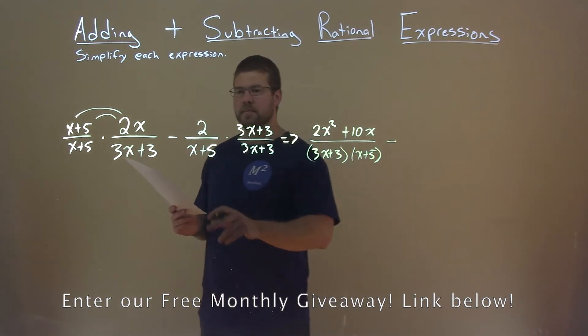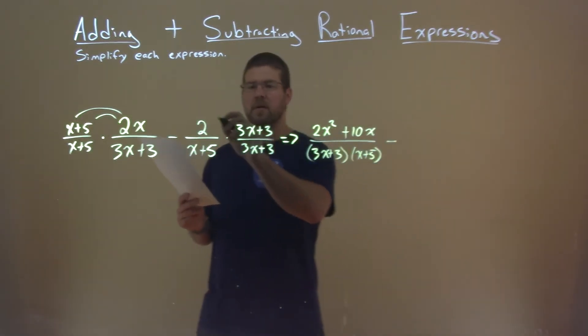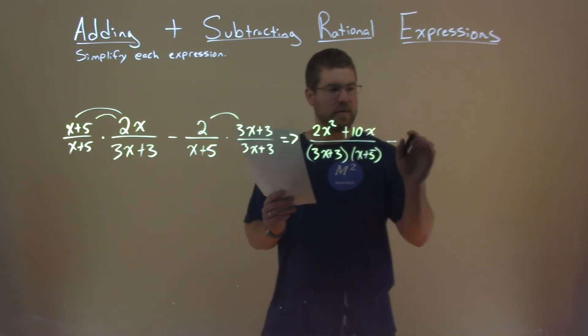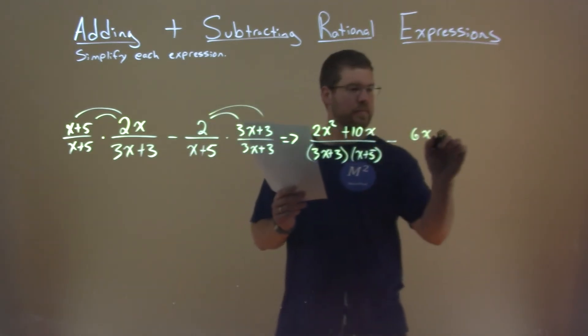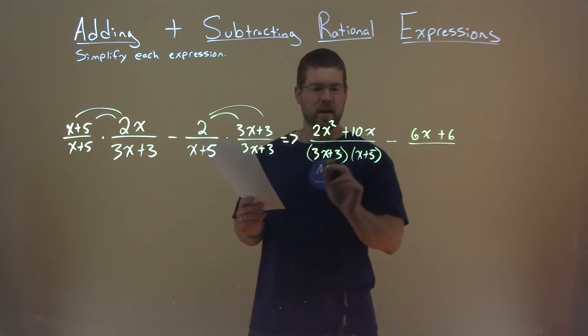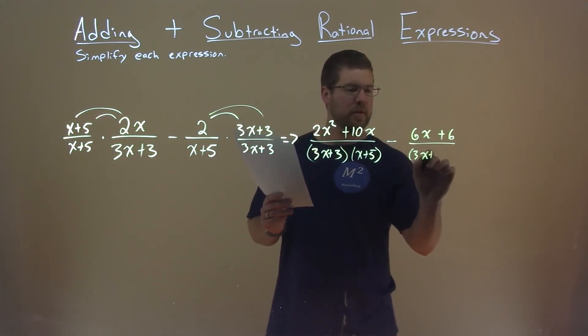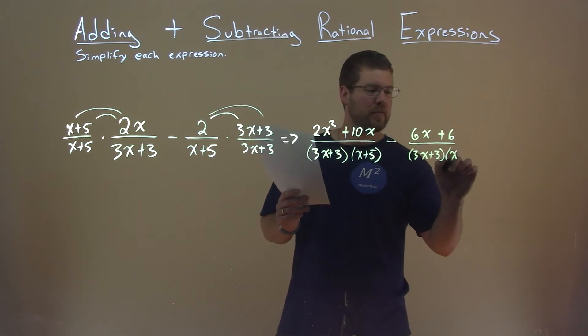Now we're subtracting the right-hand side. 2 times 3x is 6x, and 2 times 3 is 6, over again that denominator, 3x plus 3, times x plus 5.